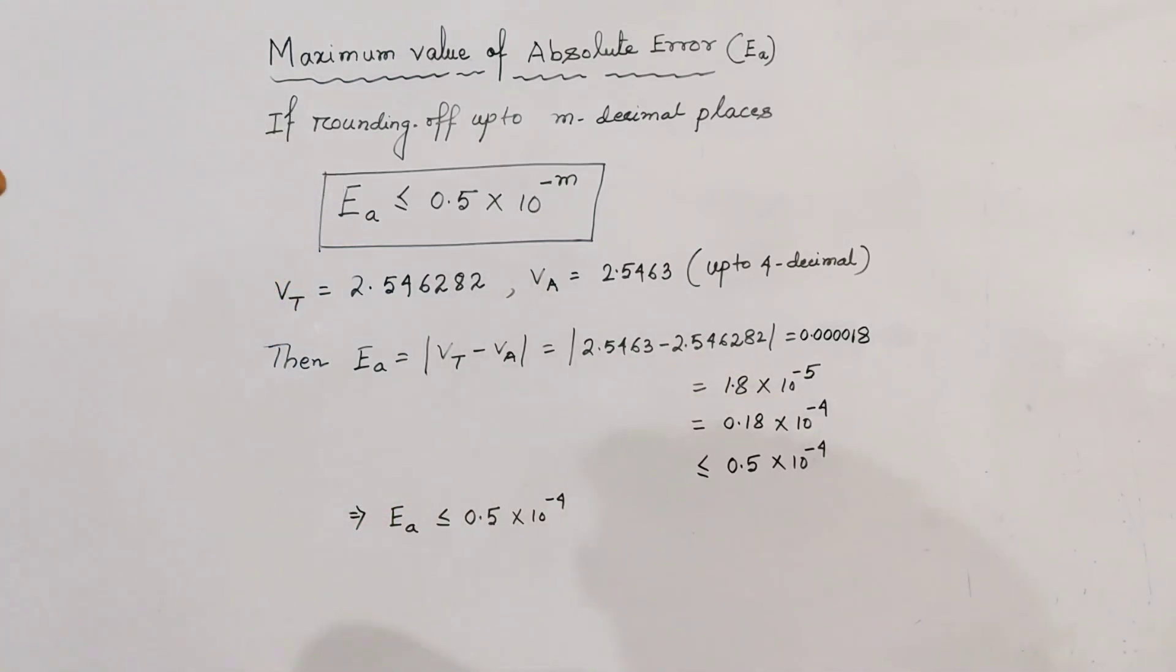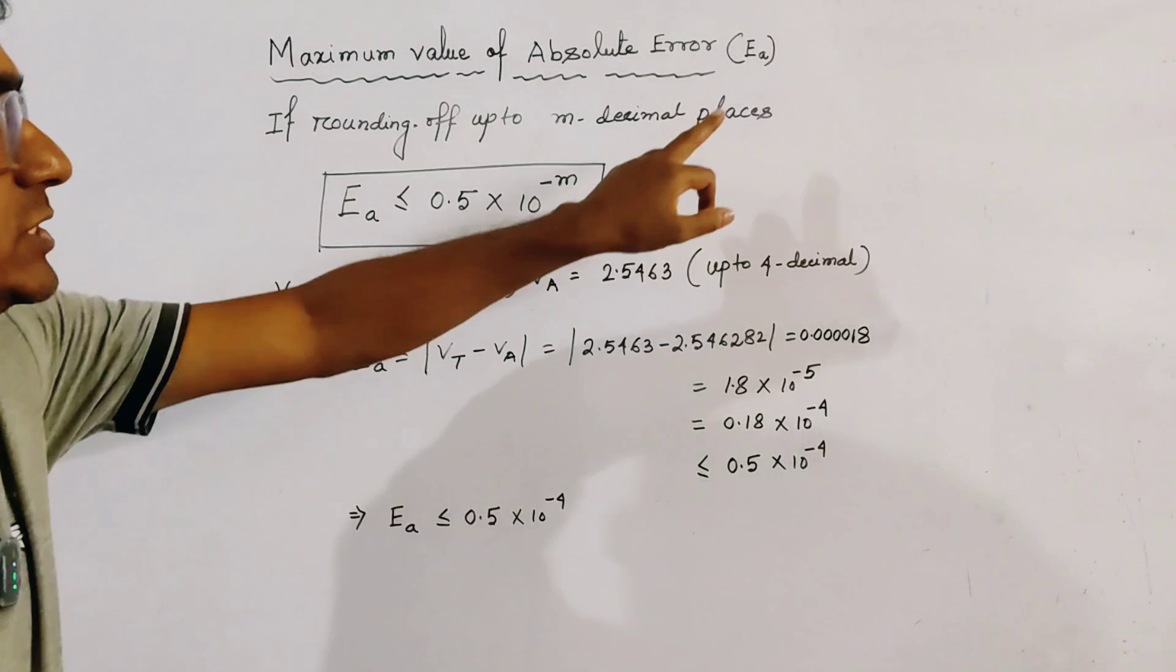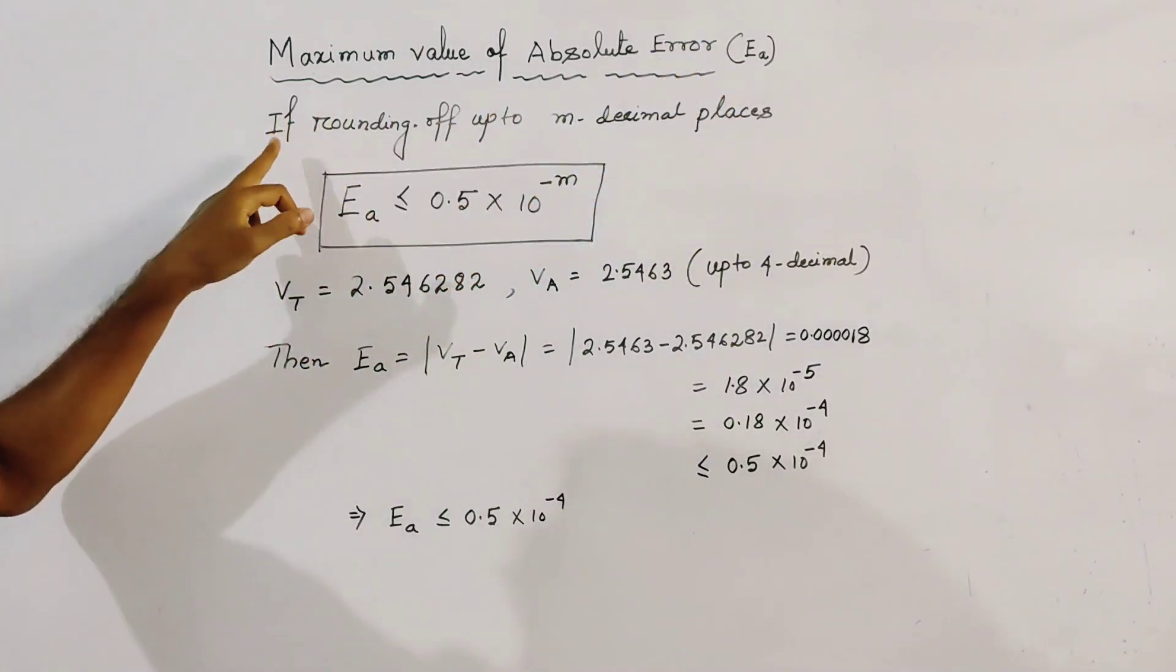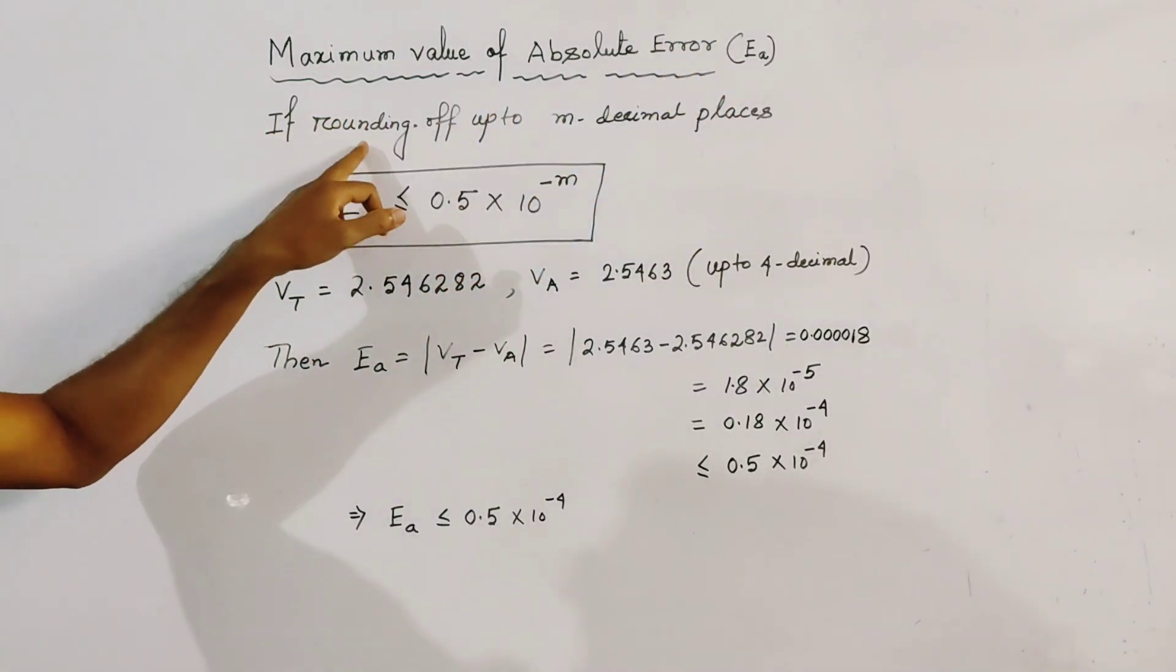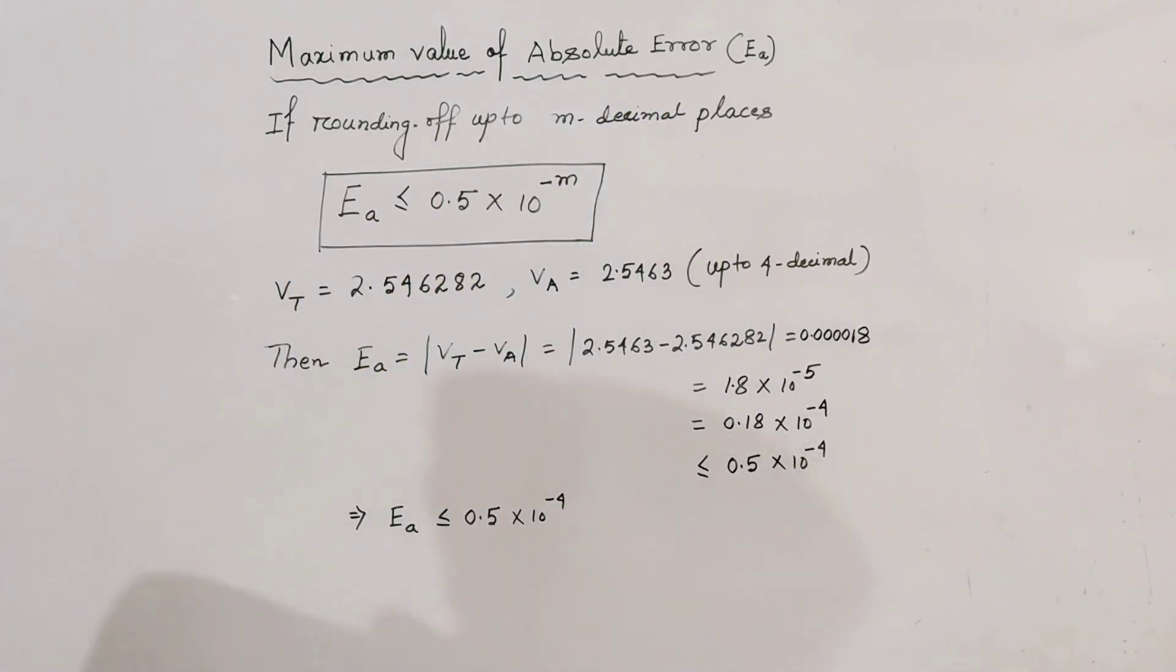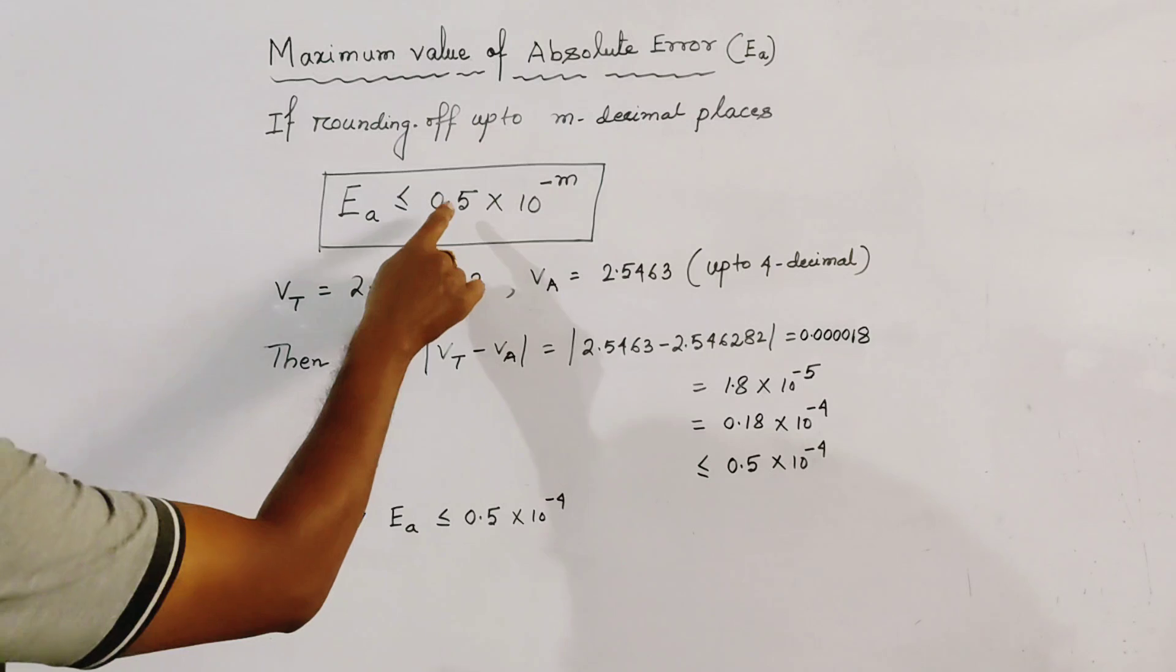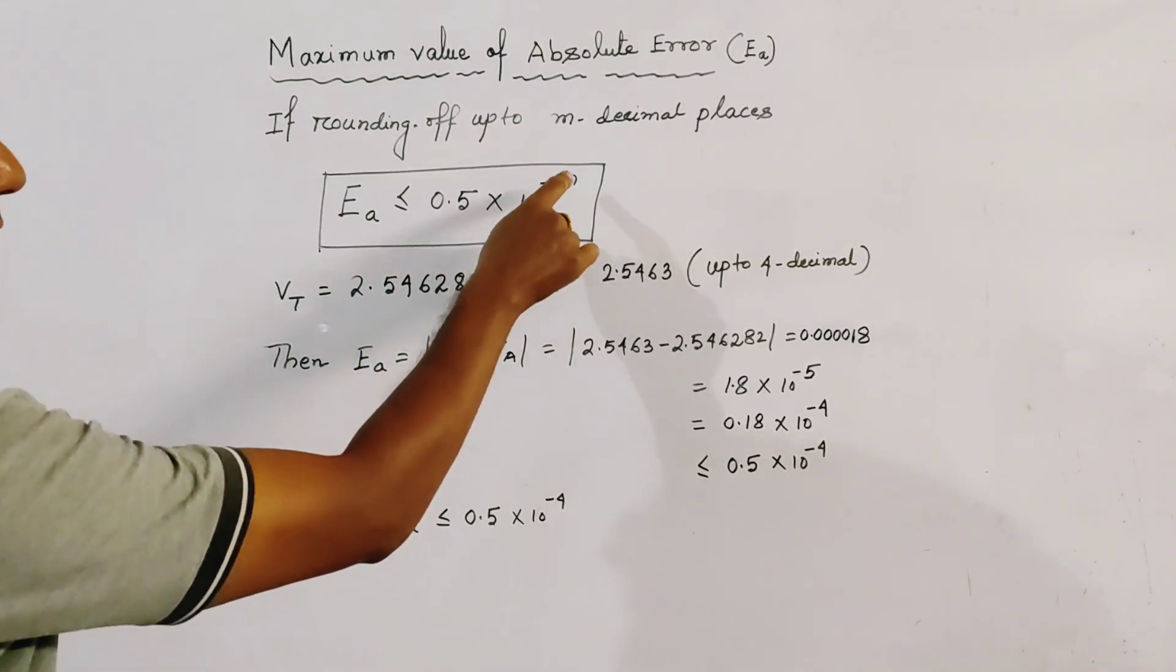Important statement about the maximum value of absolute error, which is Ea. If a number is rounded to n decimal places, then the maximum value of absolute error Ea is less than or equal to 0.5 times 10 to the power minus n.